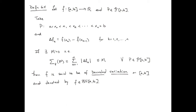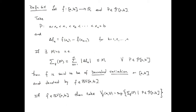For a function of bounded variation on the closed interval [a, b], we take the supremum over all possible partitions of [a, b] — the supremum of the variation over all possible partitions of [a, b] — and we call that the total variation of the function on the closed interval [a, b].